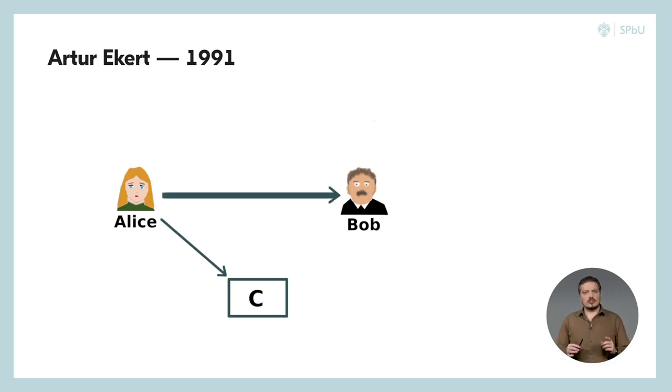The main advantage of E-91 is that Alice does not even have to trust this third party. She, along with Bob, can always check if there was an intrusion. Let's denote this third party by letter C, meaning the key creation center.